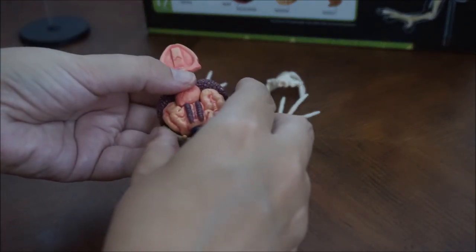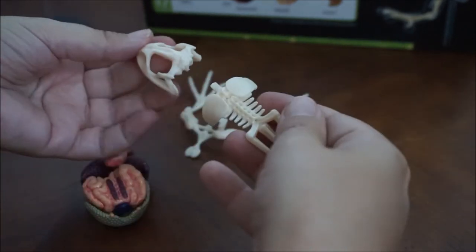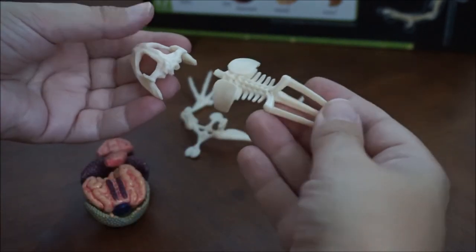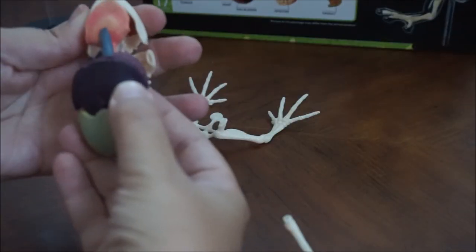The kidneys, intestine, and bladder are all in one piece. And then there's some detailing that show the different ovary versus oviduct.